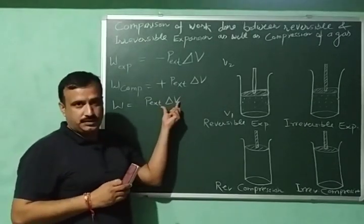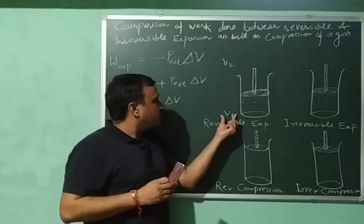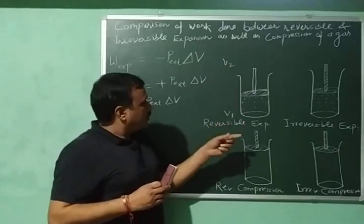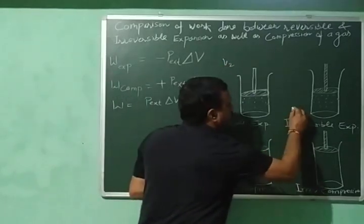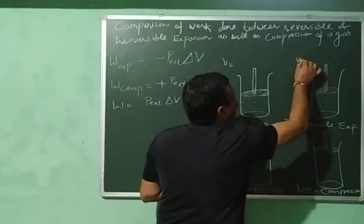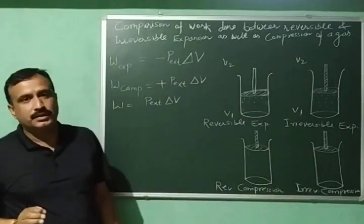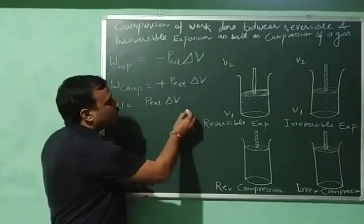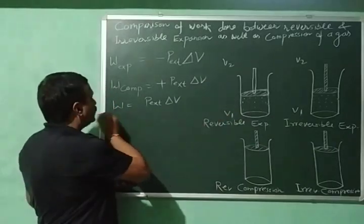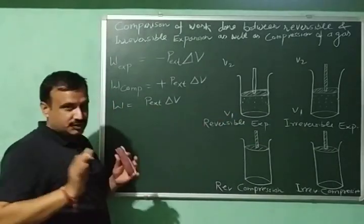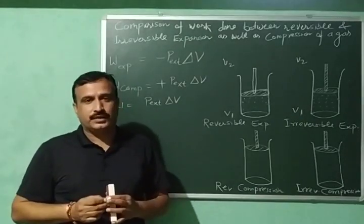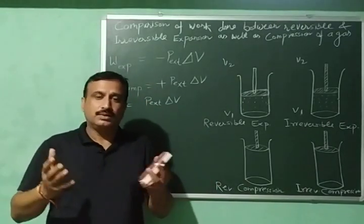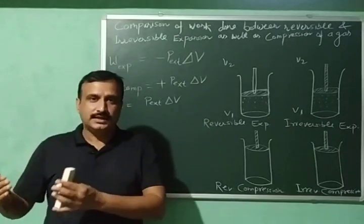To compare the work done during reversible and irreversible expansion, we will keep the volume change constant — that is, ΔV constant. This means initial volume V1 and final volume V2 are the same in both processes. If ΔV is constant, the work done will depend only on external pressure P_external.